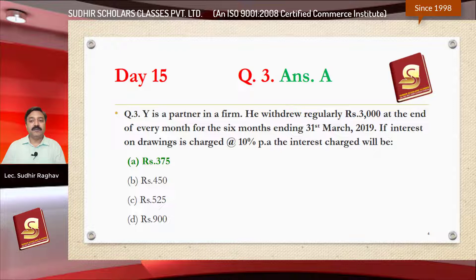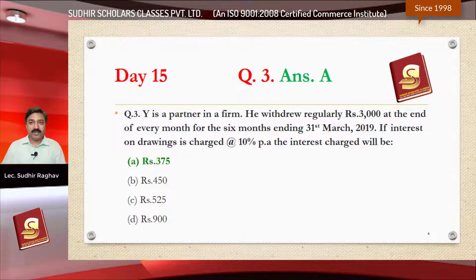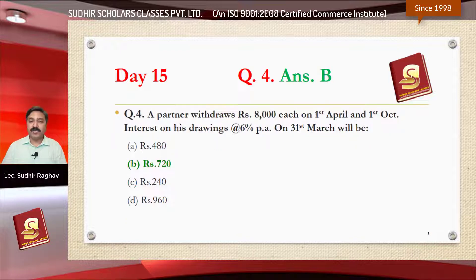Question number three: Y is a partner in a firm. He withdraws regularly rupees 3000 at the end of every month for six months ending 31st March 2019. If interest on drawings is charged at the rate of 10 percent per annum, the interest charged — correct answer is option A, rupees 375.